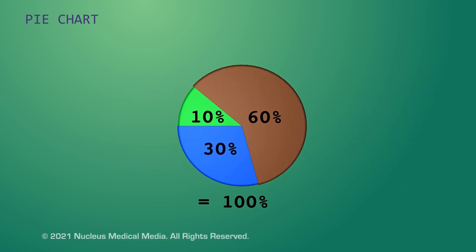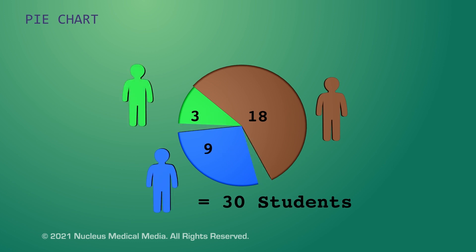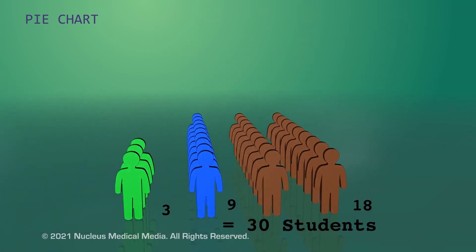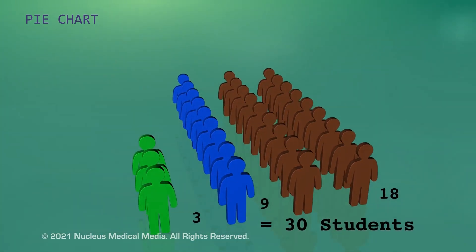For example, in a classroom of 30 students, this pie chart represents how many have brown eyes versus blue eyes versus green eyes. Pie charts don't show trends, they just show how things are distributed within a group.